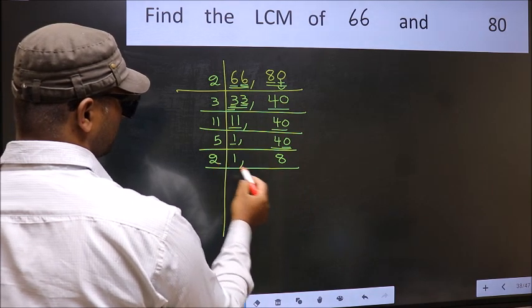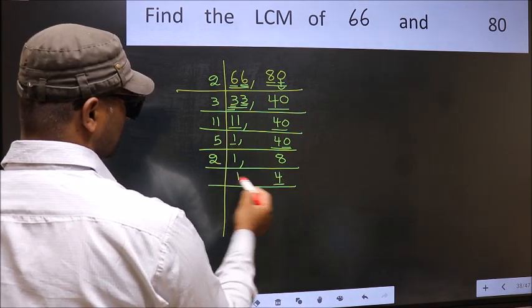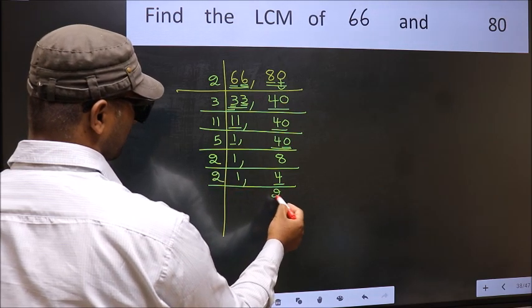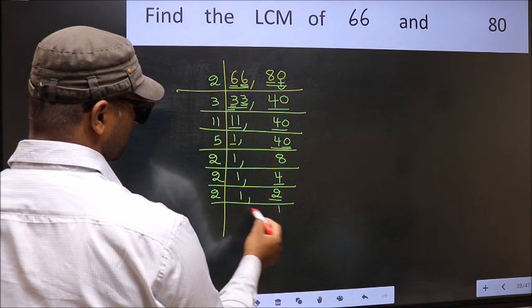Now 8 is 2 times 4 is 8. Now 4 is 2 times 2 is 4. Now we have 2, 2 is a prime number, so 2 times 1 is 2.